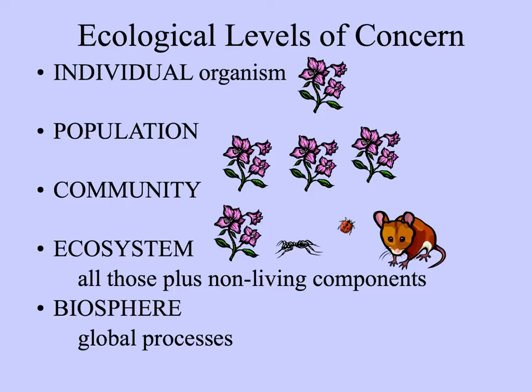An individual is shown at the top — a little plant. A population is a group of individuals of the same species that live in the same place and therefore potentially interact with or mate with each other. A community includes a population of plants, a population of ants, ladybugs, mice, and anything else that lives in that particular habitat — those populations living in the same place form a community. The ecosystem is the community plus the non-living components of the environment, and the biosphere is a step up: the global processes.